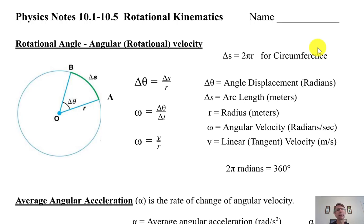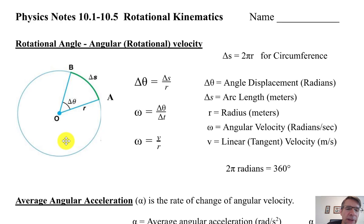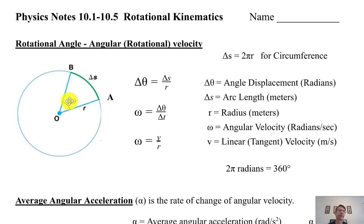Physics notes, units 10.1 to 10.5: rotational kinematics. Starting with a quick review from unit six on rotational or angular motion — the two terms are interchangeable. This covers things that are spinning, rotating, or going in a circle. Delta theta is the angle; in this diagram it looks about 45 degrees, which is pi over 4 radians. You'll need to memorize that. We need to convert angles from degrees to radians, so that's your angular displacement.